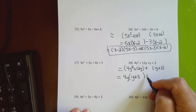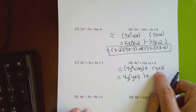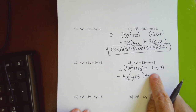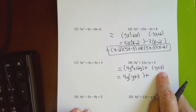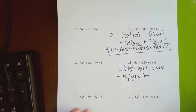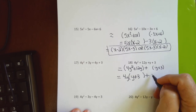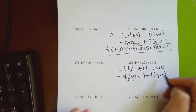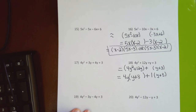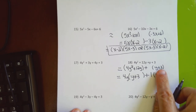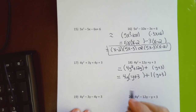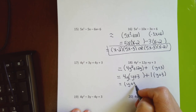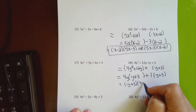In the second parenthesis both terms don't have a y and the numbers 1 and 5 don't share a common factor other than 1. When there isn't a common factor you factor out a 1 and just leave the second parenthesis intact, since 1 times anything is itself. The answer is (y + 3)(4y + 1) or (4y + 1)(y + 3).